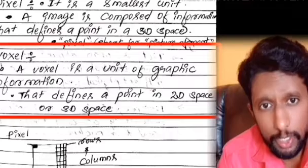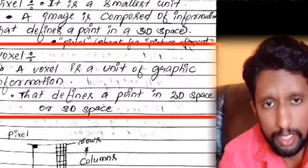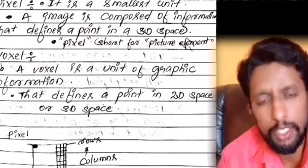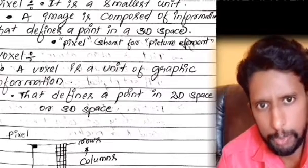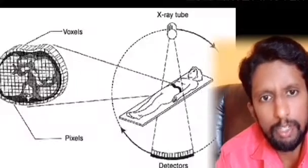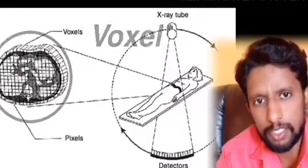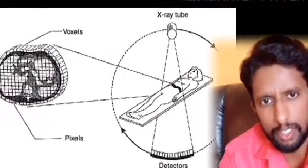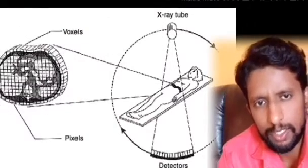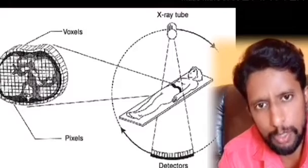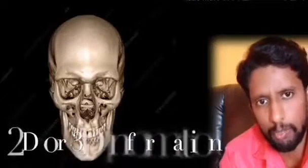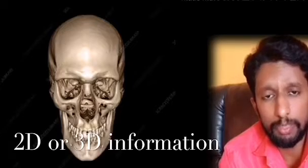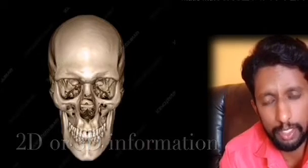A voxel is a unit of graphic information that defines a point in 2D or 3D space. In CT imaging, voxels carry the 3D information that corresponds to each cell in the reconstructed image.